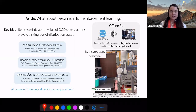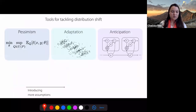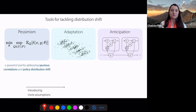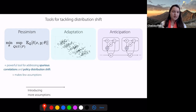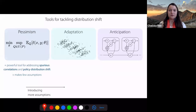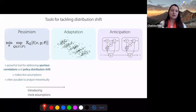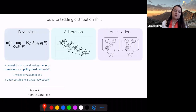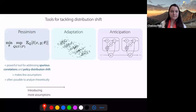If you apply this idea of pessimism to offline RL on a real robot, you can get it to successfully close the drawer despite the fact that it was only trained on a static dataset with a different policy. This policy has a 76% success rate. In summary, pessimism seems to be a powerful tool for addressing spurious correlations and policy distribution shift. It makes fewer assumptions about the kind of distribution shift you'll see, and it's also often possible to analyze theoretically.